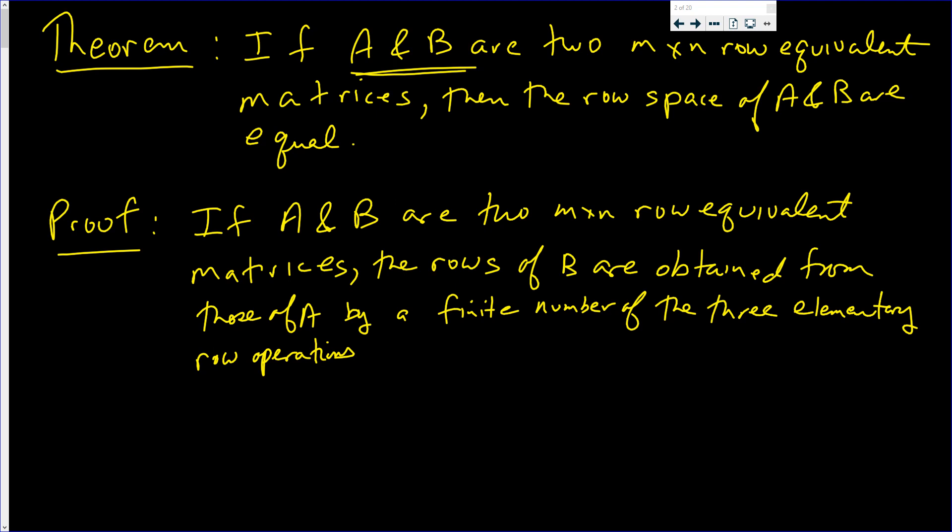Okay, so now what does this say? It says that each row of one is obtained from the other. Each row of B is a linear combination of the rows of A. It is a linear combination of the rows of A.